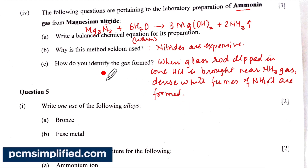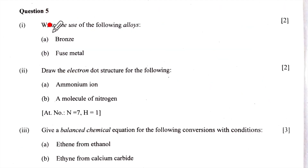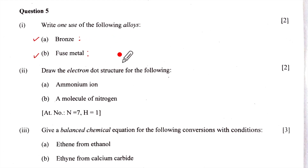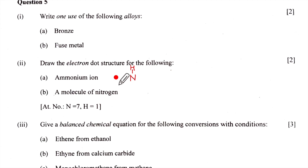That finishes question 4 — questions 3 and 4 give us 20 marks. Question 5, part one: write one use of the following alloys — bronze and fused metal; take these directly from the textbook. Part two: draw electron dot structures. First — the ammonium ion. Ammonia (NH₃) has three single bonds with nitrogen and a lone pair of electrons.